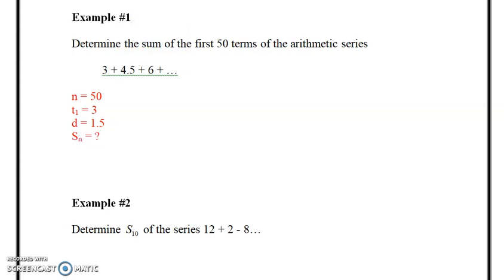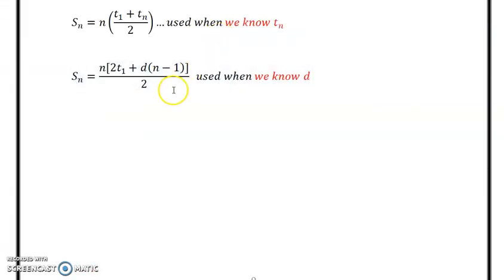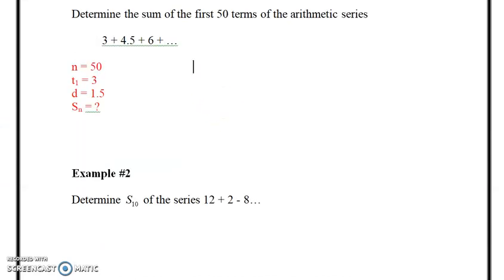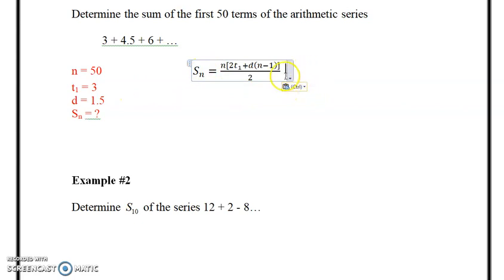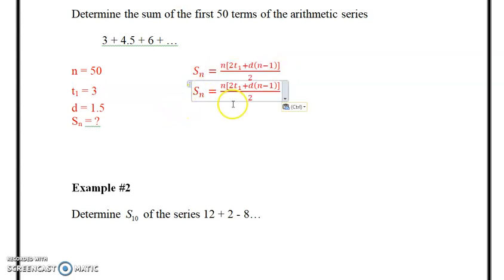And it's asking for the sum. So the sum of n terms is a question, and of course the n is 50 in this particular case. So if we flip back to our formula, we do have a formula that only requires us to have the first term, the n value, and the common difference d. And that is that second formula right here. So we're going to borrow all that for a minute. So the sum of n terms is going to be n we have, the first term we have, the difference we have, and n is used again. So I'm going to recopy this. And what we're going to do is we're going to plug in what we know. We know n is 50. T_1 brackets are extremely important here. The first term we know is 3, so it's going to be 2 multiplied by 3. The common difference is 1.5, so we'll plug 50 in. And that's all divided by 2.